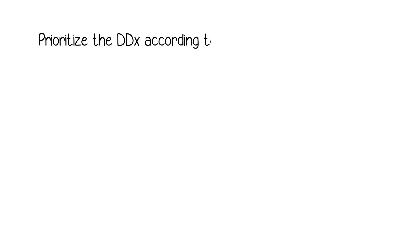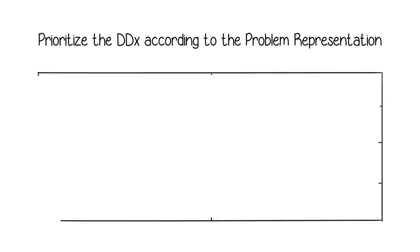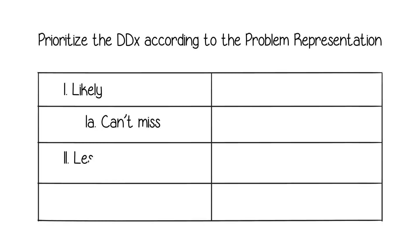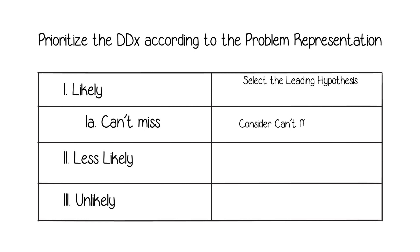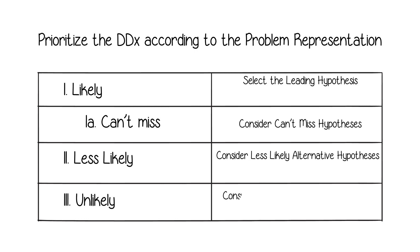A prioritized differential diagnosis is a probability ranking of the diagnoses that a clinician is considering based on how well they match the problem representation. A clinician should first select the leading hypothesis and consider can't-miss hypotheses, then consider less likely and unlikely alternative hypotheses.